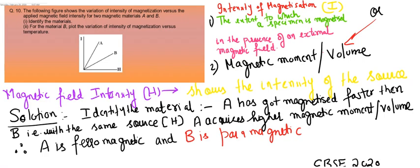If you look into this graph, you have two materials A and B which are acquiring magnetic moment, or they're getting magnetized with the help of an external source having a magnetic field intensity H.